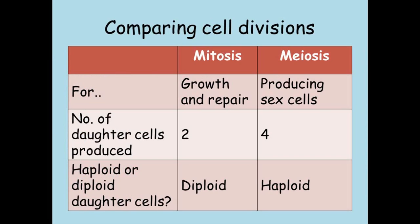A common exam question is to compare mitosis and meiosis. Remember to show how they're similar as well as how they're different. They're similar processes in that they both produce new cells called daughter cells, and they also both start with the chromosomes being copied. The key differences are that mitosis produces two daughter cells and meiosis produces four. The daughter cells in mitosis are identical to each other, but in meiosis they're different.